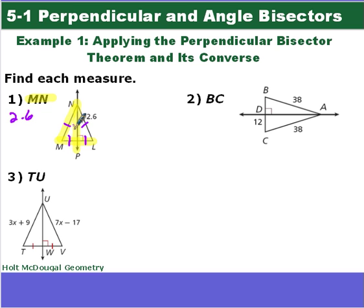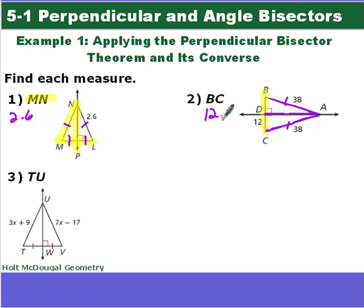Number two, we want to find BC. We see that the lengths are congruent and that this line is perpendicular. Since these two line segments are congruent, we know this has to be a perpendicular bisector, meaning DC and DB are the same length since it cuts it in half. So BD is going to be 12, and BC is going to be 12 plus 12, which is 24.